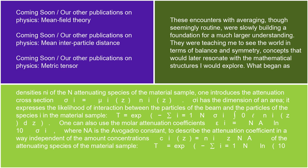It expresses the likelihood of interaction between the particles of the beam and the particles of species i in the material sample: T = exp(−Σᵢ σᵢ ∫₀ℓ nᵢ(z)dz). One can also use the molar attenuation coefficients εᵢ = N_A·ln(10)·σᵢ, where N_A is the Avogadro constant, to describe the attenuation coefficient in a way independent of the amount concentration cᵢ(z) = nᵢ(z)/N_A of the attenuating species of the material sample.